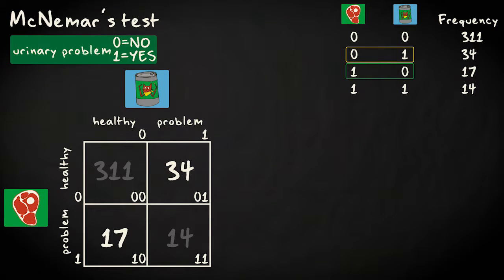In the diagonals, we see the irrelevant, consistent combinations. The off-diagonals represent the interesting, inconsistent combinations. With this two-by-two table in place, we can now turn to the test itself.